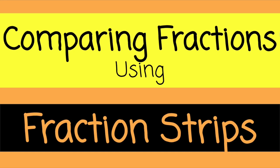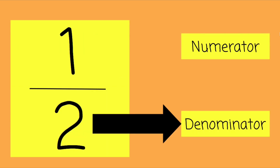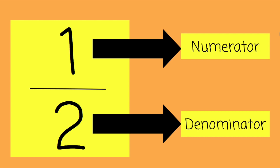Hi friends, today we're going to do a little fraction review and talk about how to compare fractions using fraction strips. The number on the bottom is called the denominator, and it represents the number of equal parts of a whole. The number on top is called the numerator, and that represents how many parts of that whole we're talking about.